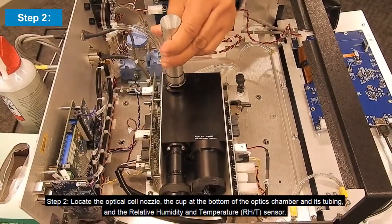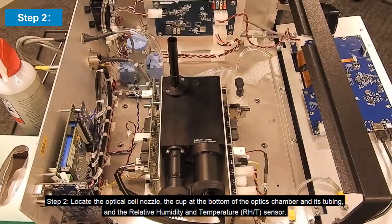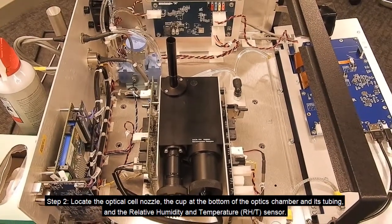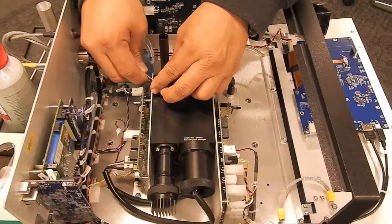Step 2: Locate the optical cell nozzle, the cup at the bottom of the optics chamber and its tubing, and the relative humidity and temperature sensor.